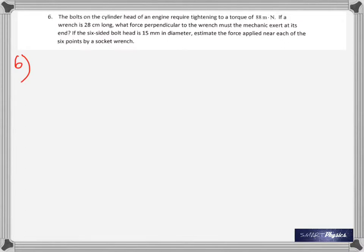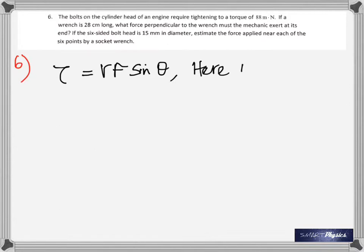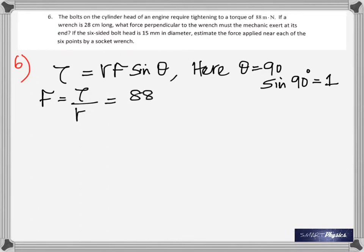You are using a wrench that is 28 centimeters long. What force perpendicular to the wrench must the mechanic exert at its end? Tau is given, the radius is given — find the force. Since tau = r × F × sin θ and θ is 90°, sin 90° = 1. Dividing tau by the radius (0.28 meters) gives 310 newtons.